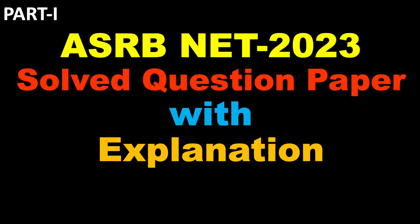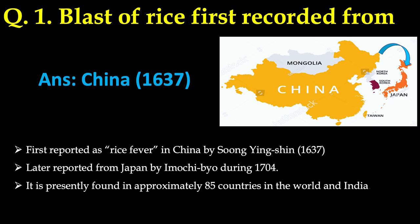Hi everybody, today I'm going to discuss the 2023 ASRB NET question paper with explanation. This is part one where I'm going to discuss 25 questions. Let us start with the first question: blast of rice was first recorded from — the answer is China during 1637. The disease blast of rice was first reported as rice fever disease in China by Song Yin Shen during 1637.